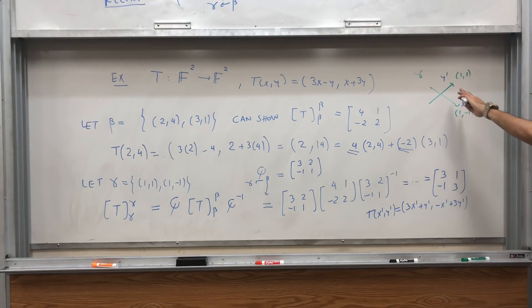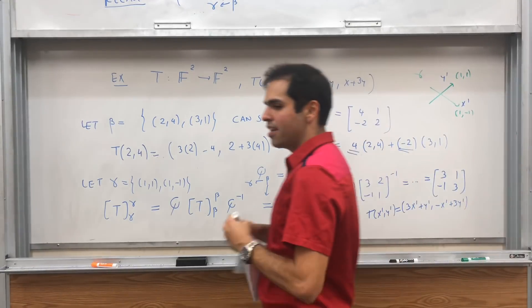So if you identify your new coordinates as your new axes, then what this linear transformation T does, it does 3X prime plus Y prime and -X prime plus 3Y prime. That's what it looks like.